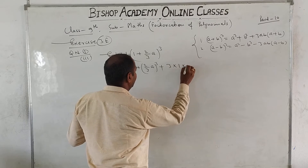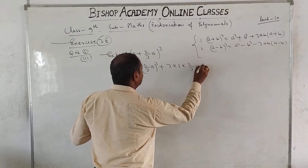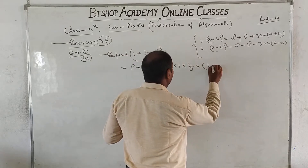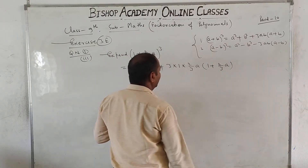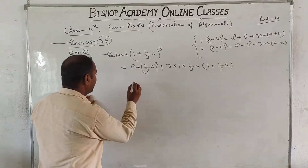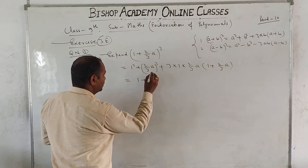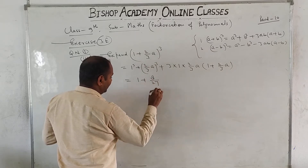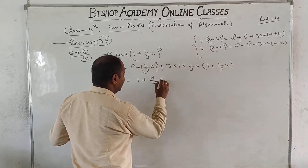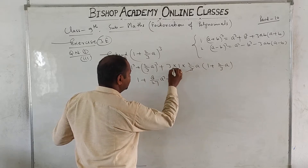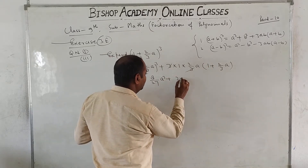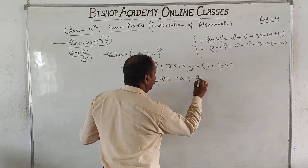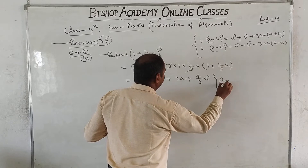3 times a, where a's value is 1, b's value is 2/3a, in bracket (a plus b), that is (1 + 2/3a). Opening the bracket: 1 plus 8/27a cube, plus — the 3s cancel — 2a into 1, giving 2a, plus 2a multiplied gives 4/3a square. This is the final value.